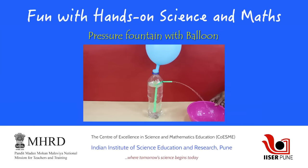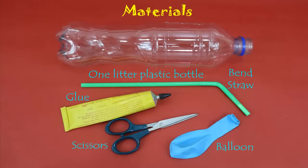In this video, you will learn to make a wonderful water fountain with very simple materials. For this, you will need a balloon, a plastic bottle, a bendable straw, glue, and a pair of scissors.